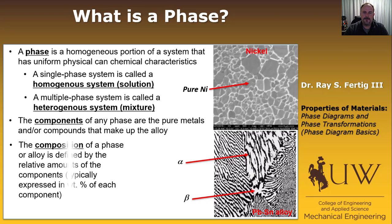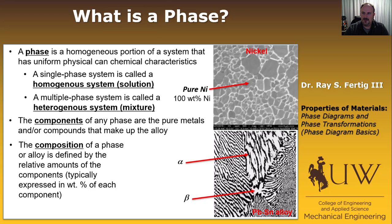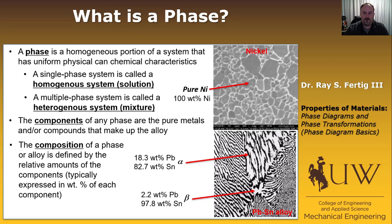But we don't exactly know the composition yet. The composition is defined as the relative amount of each of the components. In the case of alpha, we'd want to know how much lead and how much tin; similarly for beta. In the pure nickel picture, it's straightforward — 100 weight percent nickel. In the case of the solder, the alpha phase is 18.3 weight percent lead and 82.7 weight percent tin, and the beta phase is 2.2 weight percent lead and 97.8 weight percent tin.